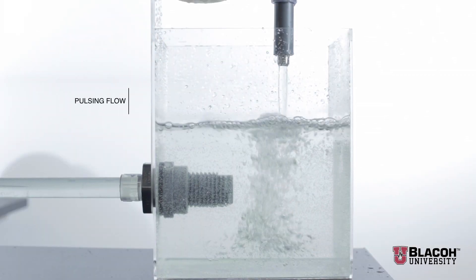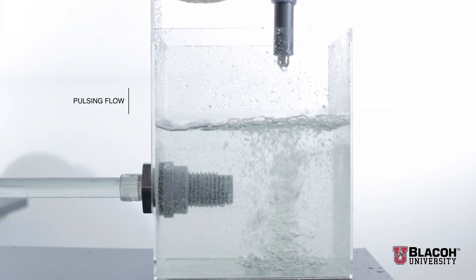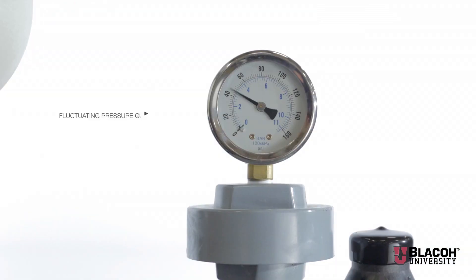There is a very large swing in pressure on the pressure gauge. The flow actually stops at every rotation of the roller shoe. As we activate the dampener by opening an isolation valve, you'll notice that instantly the flow becomes steady and smooth.